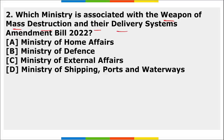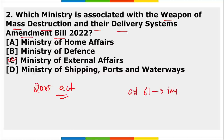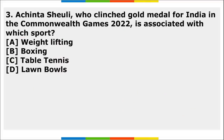Next MCQ: The ministry associated with the Weapons of Mass Destruction and Their Delivery Systems Amendment Bill 2022 is the Ministry of External Affairs. Parliament recently passed this bill, which seeks to amend the 2005 Act and stop persons from financing any prohibited activity related to weapons of mass destruction. Also remember Article 61, which is related to the impeachment of the President, taken from the USA.